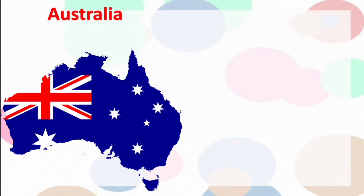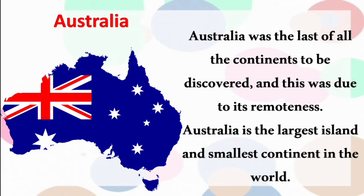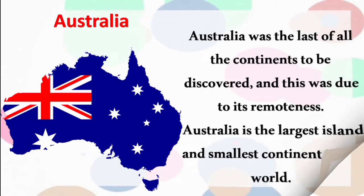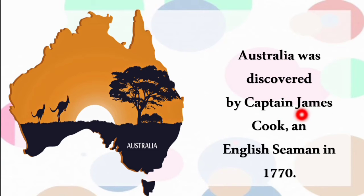Australia was the last of all the continents to be discovered, due to its remoteness. It is the largest island and the smallest continent in the world. Australia was discovered by Captain James Cook, an English seaman, in the year 1770.